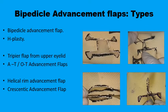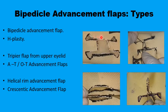Bipedicle flaps are used rather than a single pedicle flap if the defect is large enough to require more tissues than what a single pedicle can provide. The other indication is if the defect is in the midline, where keeping the symmetry of the landmarks around the midline is important, so you recruit tissues from both sides to maintain symmetry.